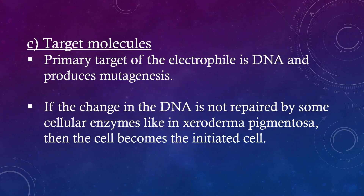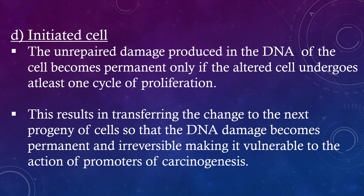The primary target of the electrophile is DNA, producing mutagenesis. If the change in DNA is not repaired by cellular enzymes — as seen in xeroderma pigmentosum — the cell becomes an initiated cell. The unrepaired damage in the DNA becomes permanent only if the altered cell undergoes at least one cycle of proliferation, transferring the change to progeny cells so that the DNA damage becomes permanent and irreversible, making it vulnerable to the action of promoters of carcinogenesis.